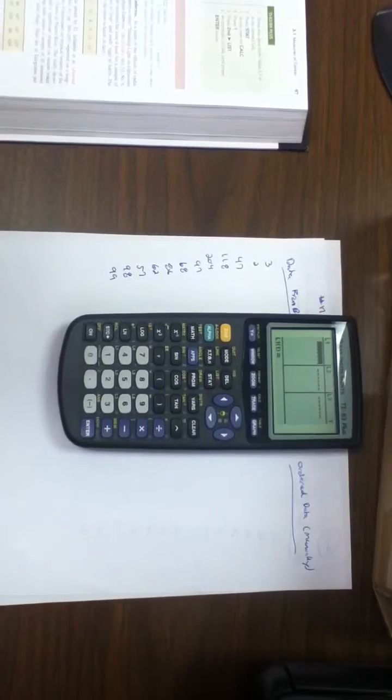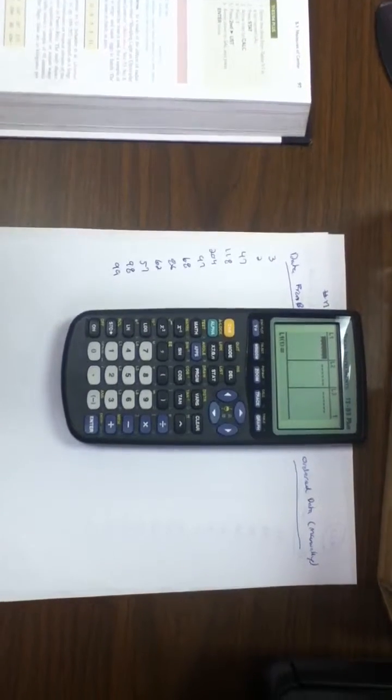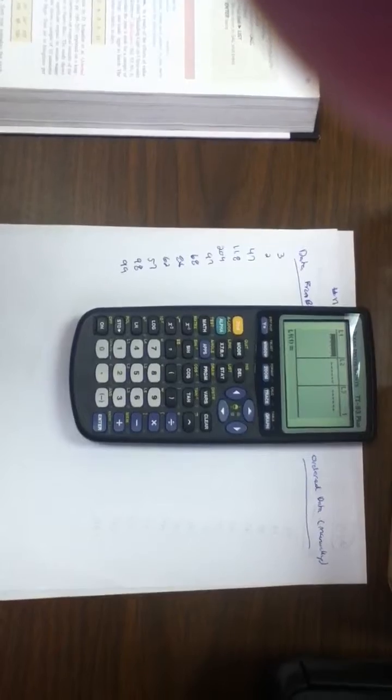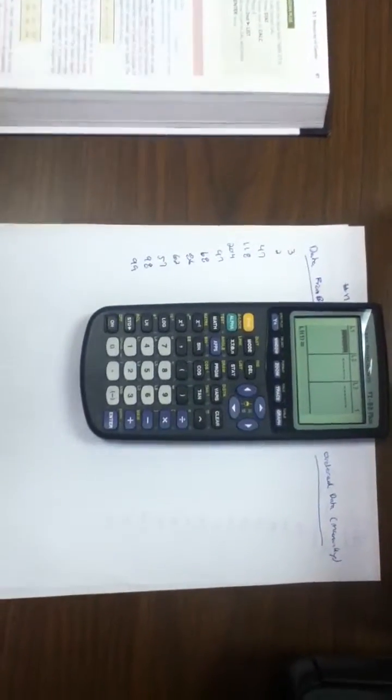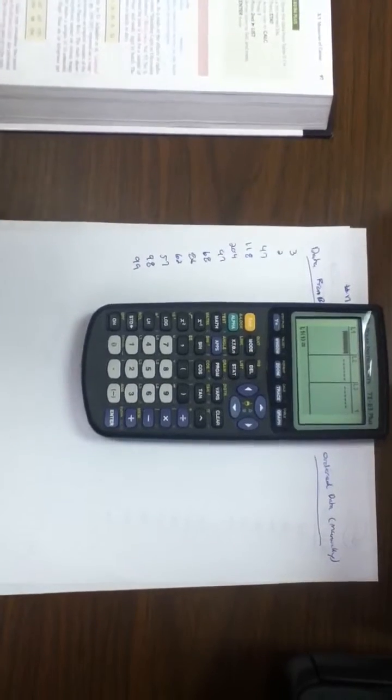If you have information in there from class, clear it out by highlighting L1, hitting your clear button, and arrowing down. It should look something like this. This is already cleared out, so I'm just going to enter the data.